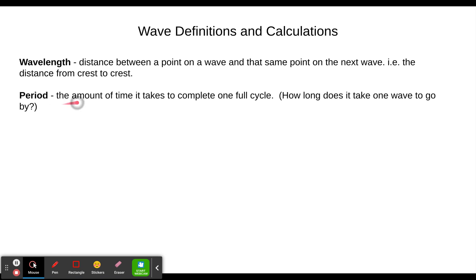Period is the amount of time it takes to complete one full cycle. How long does it take one wave to go by, or the wave to go up and down once.